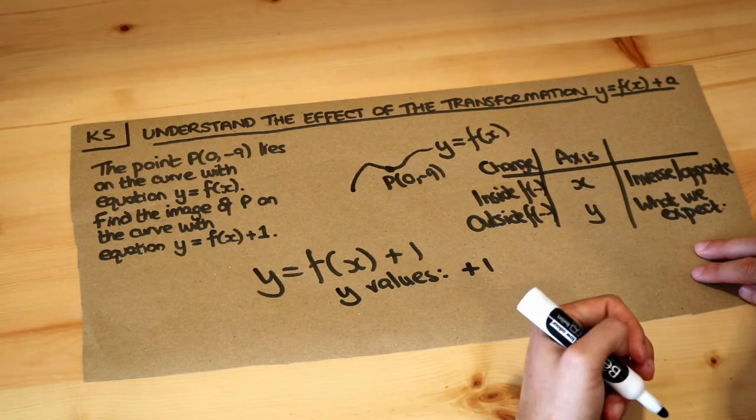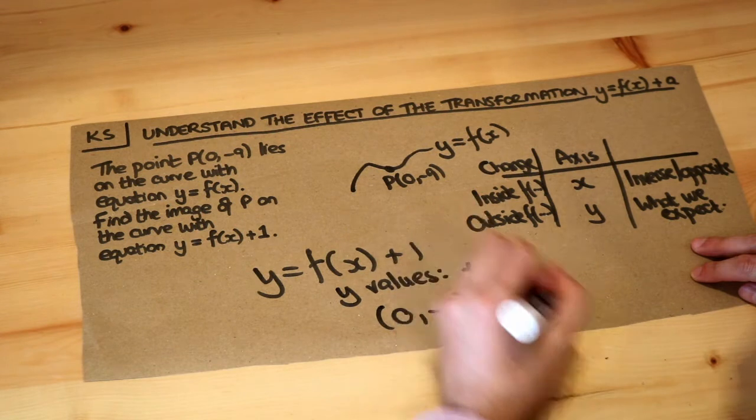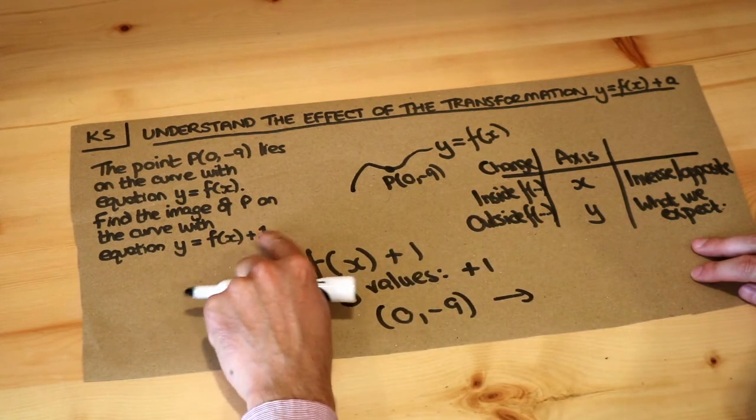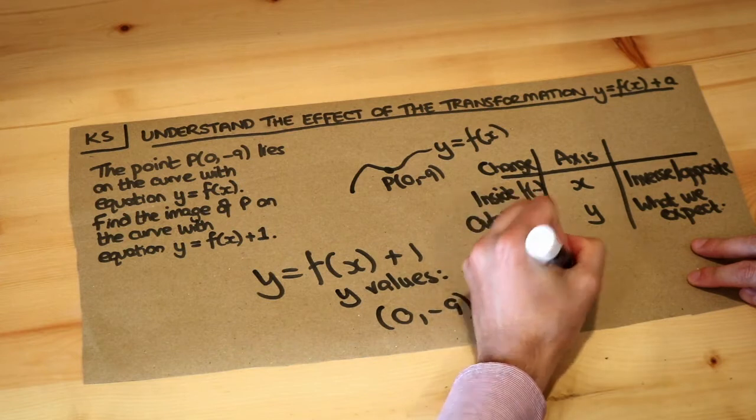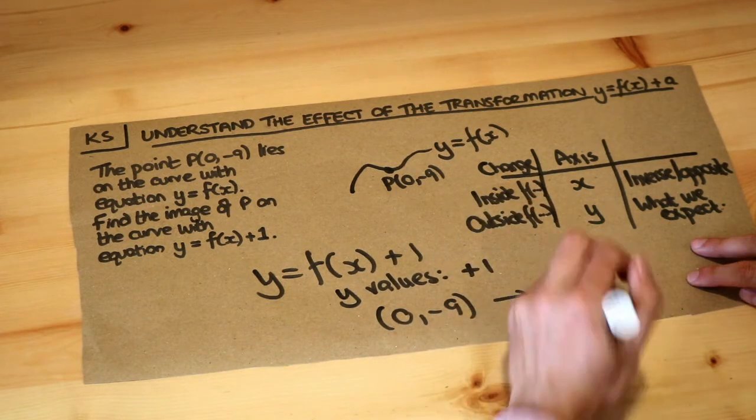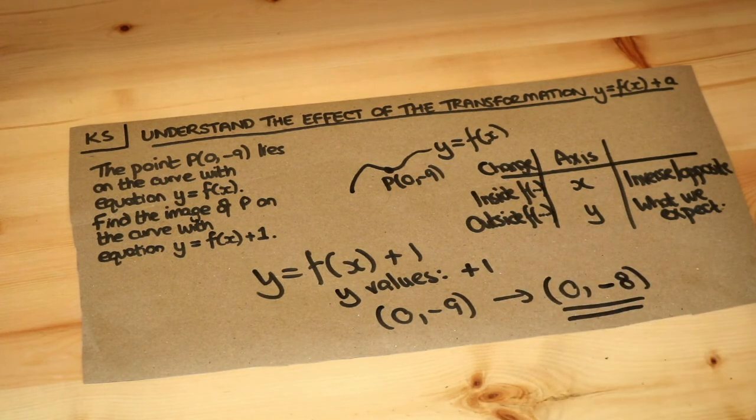So if we take this point here, 0 comma minus 9, then on the new curve with equation y equals f of x plus 1, if we add 1 to the y value, well the x value is unaffected. It remains a 0. Add 1 to that y value, we get minus 8, and that will be the new point on the curve.